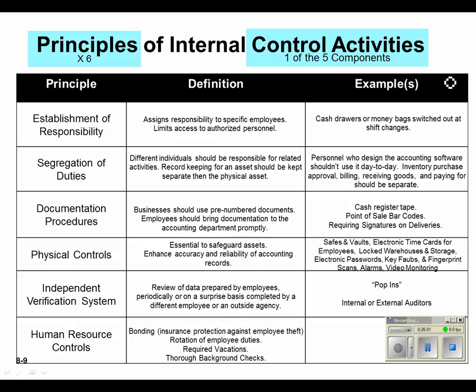Finally, human resource controls. Bonding is a fancy word where you take out insurance that protects you from employees stealing from you. Rotating an employee so they're not always doing the same thing makes it harder to steal. Requiring them to take a vacation — if you notice something suspicious, you say 'take a couple days off,' and if the fraudulent activity stops while they're gone, it's pretty easy to corner that person and say you think they're stealing. Also do thorough background checks: don't hire bad eggs. If they have a track record of theft or fraudulent behavior, don't hire them.